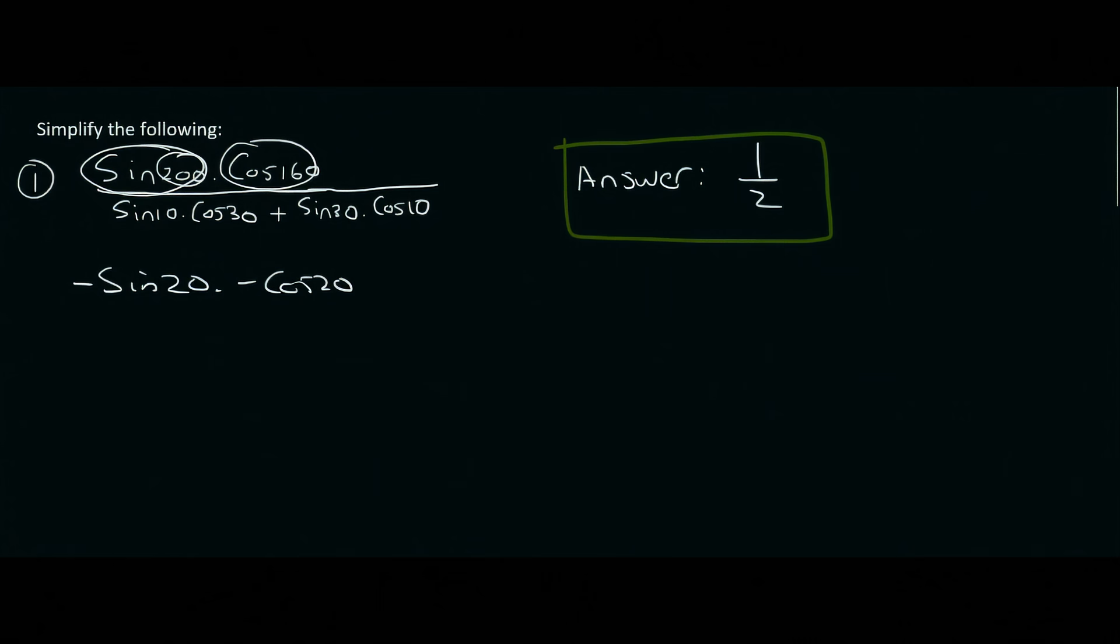So that's negative cos 20. Now what you need to notice, and I hope by now you're starting to pick this up. There's a 10, and there's a 10. And then there's a 30, and there's a 30. So we're on to something over here. So what we do is we look at our formula sheet and we see, okay, well, it's a sin and a cos and a sin and a cos. And there's a plus in between. So that is the sin A plus B. Okay, so what we're going to have is sin, and then A will just be 10 and B will be 30. So that's 10 plus 30, which is 40.